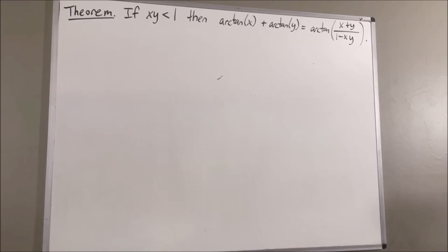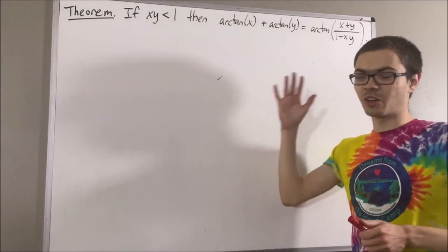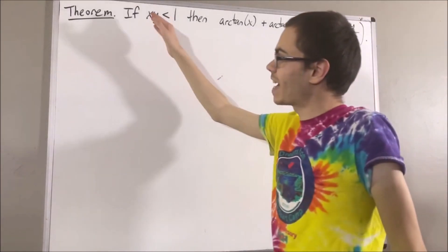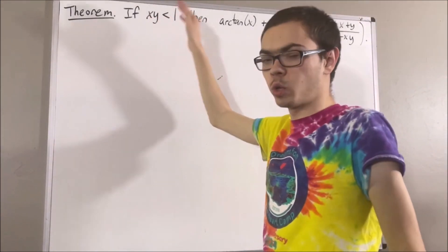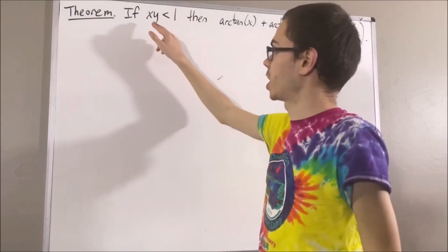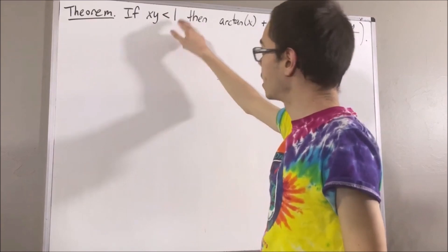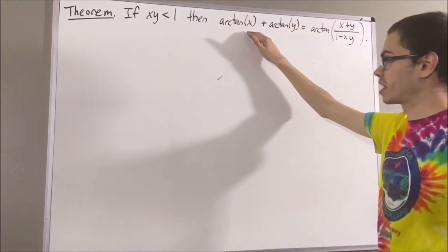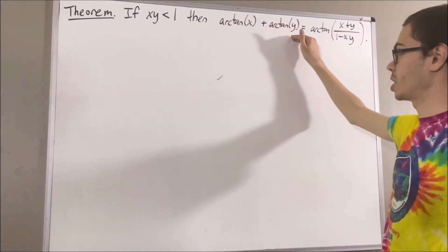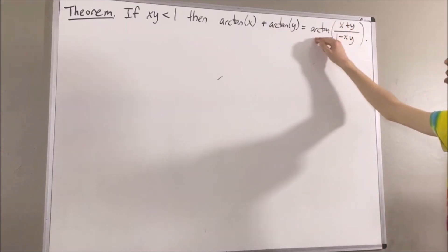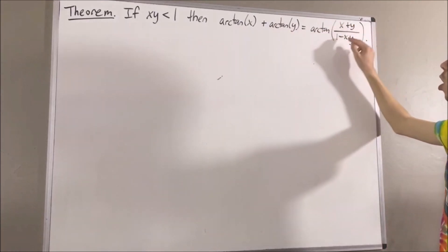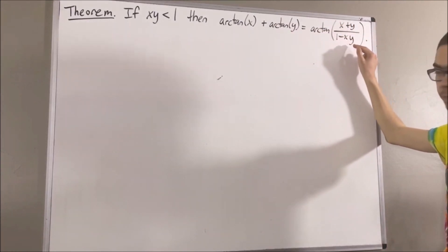Hello! In this video, we are going to prove the following theorem. If x and y are real numbers such that x times y is less than 1, then the arctangent of x plus the arctangent of y is equal to the arctangent of x plus y, all over 1 minus x times y.